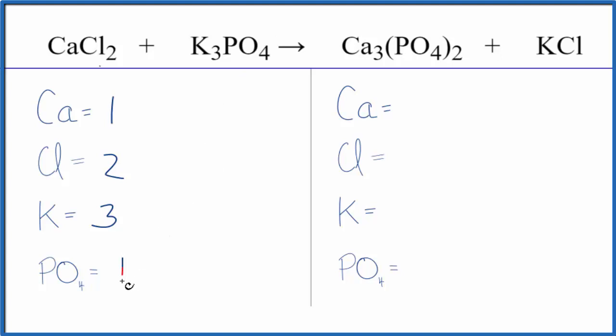So we have one phosphate group, one phosphate ion. On the products three calciums, one chlorine, one potassium, and then we have the one phosphate times two. So two phosphate ions.